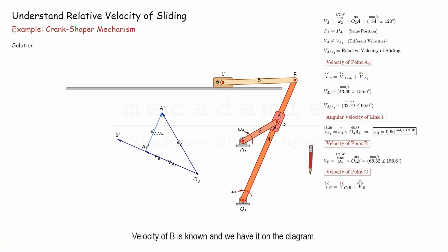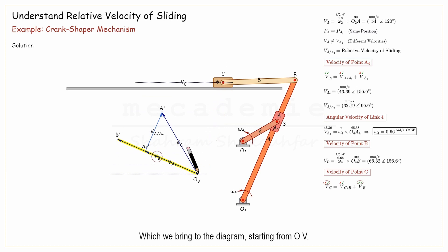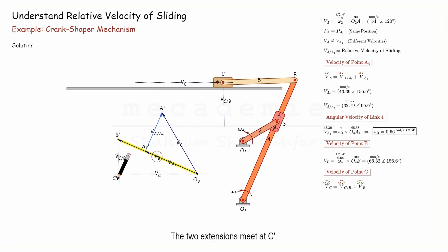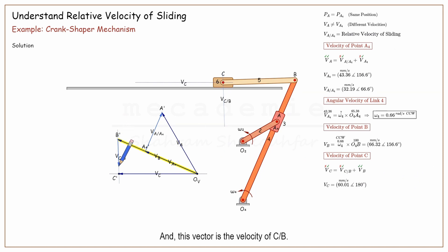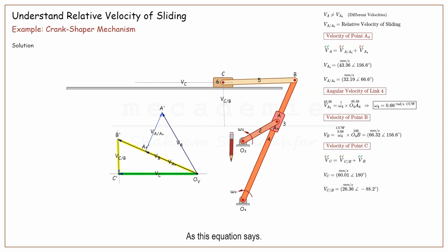Velocity of B is known and we have it on the diagram — it is from OV to B'. Velocity of C is along its path on the ground, which we bring to the diagram starting from OV. Velocity of C with respect to B is perpendicular to BC, and we bring it to the diagram at B' to continue velocity of B. The two extensions meet at C'. Here is the velocity of C, and this vector is the velocity of C with respect to B, which must be added to the velocity of B to yield velocity of C.